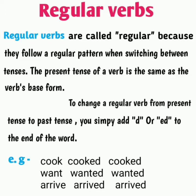Examples: cook, cooked, cooked. यहाँ पर cook base form है, cooked past form है, and cooked past participle है. Cook के last में सिर्फ ed को add किया गया है — past form में भी और past participle form में भी. वैसे ही want: wanted, wanted; और arrive: arrived, arrived.